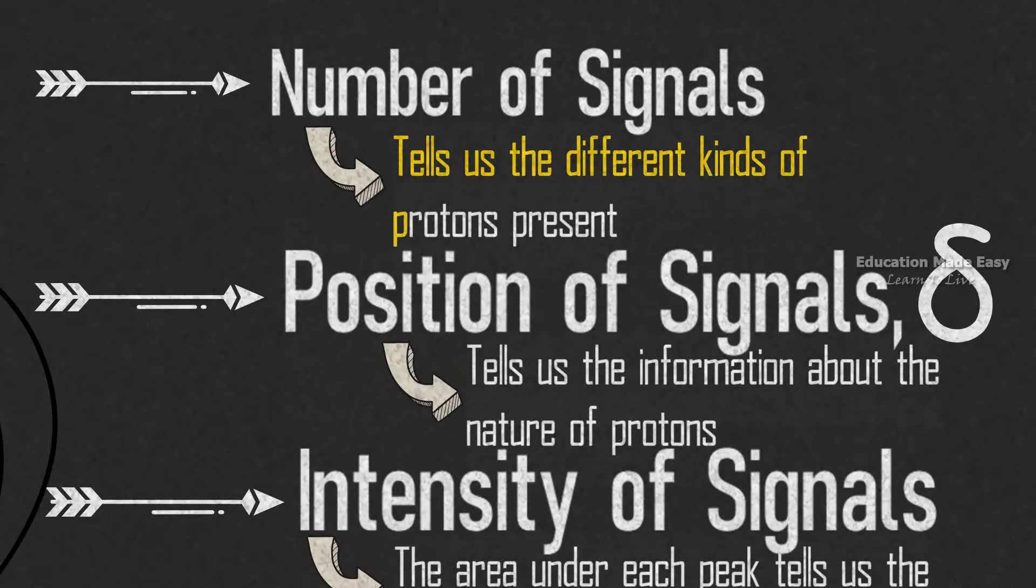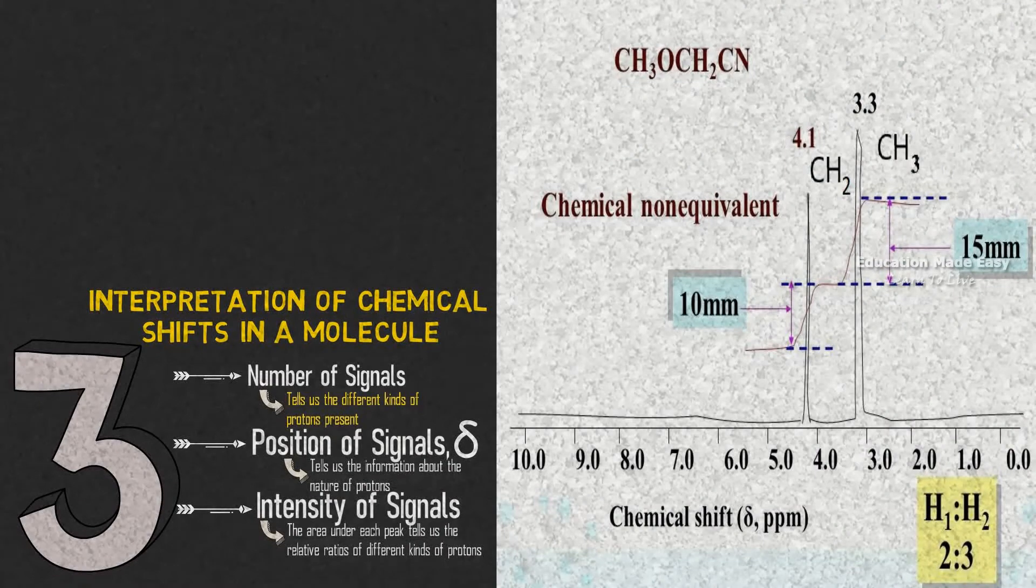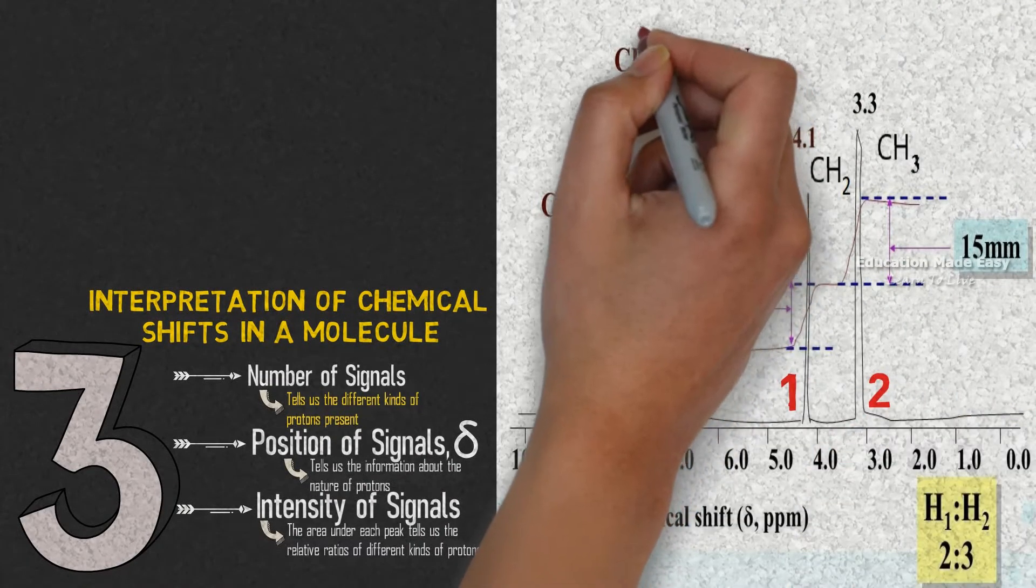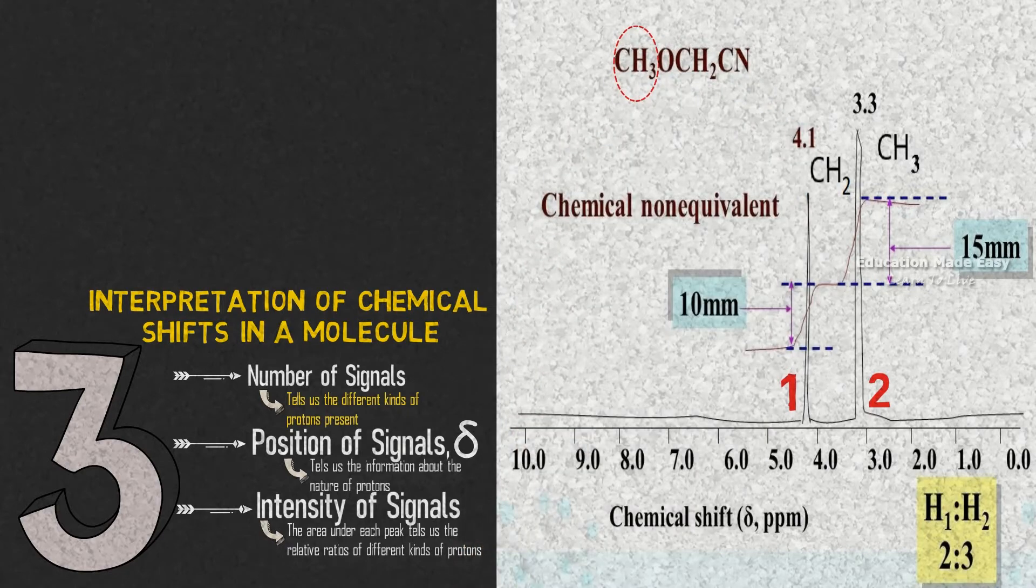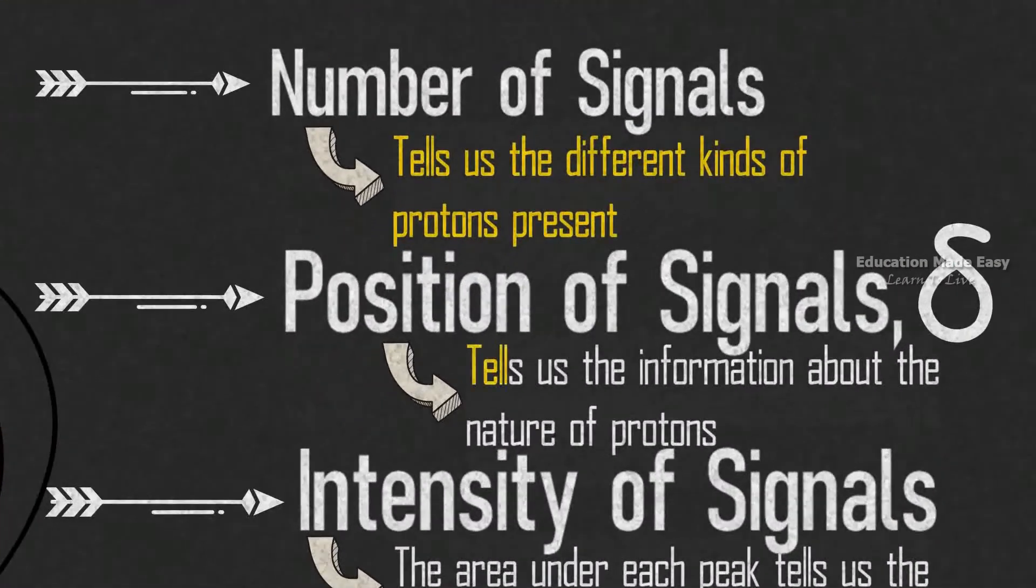Number of signals tells us the different kinds of protons present. So in the figure we have two signals, let's mark it as one and two. We can see there are two protons: CH3 and CH2.